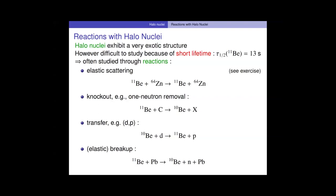The difference is the X. In the one-neutron removal — the knockout reaction — you do not measure the neutron in coincidence. There are a few experimentalists here. My wife is an experimentalist, and she says the physics is the experiment — it's what you measure.